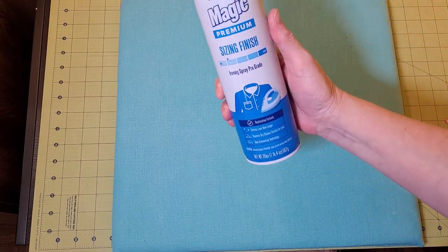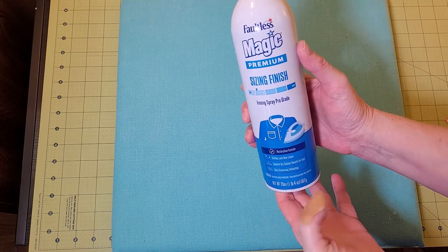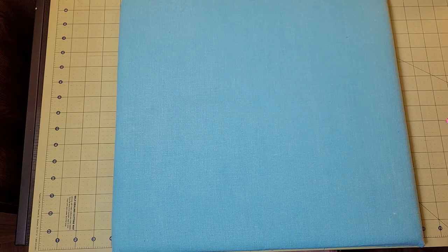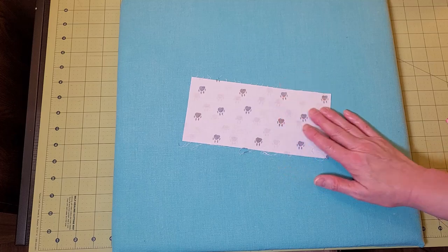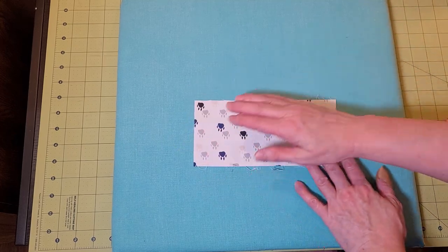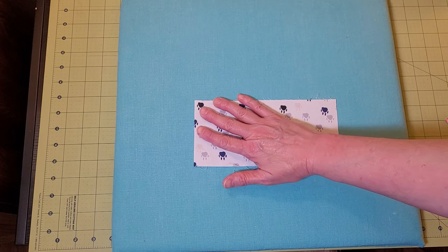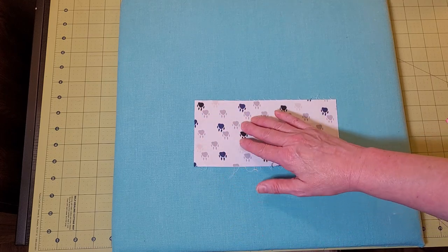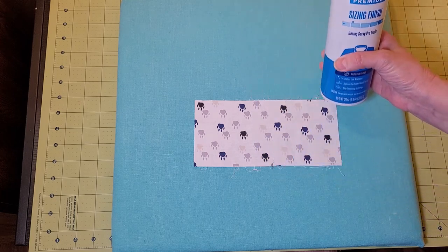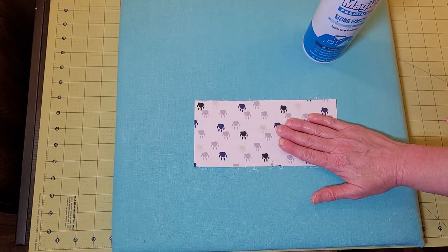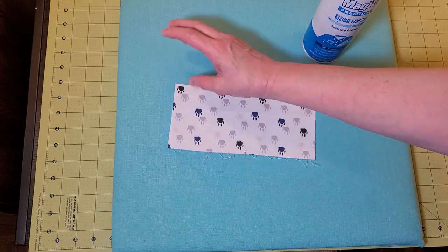One of the first things that I want to show you is a product that I use a lot, which is sizing. I use this a lot when I'm getting ready to make bags, quilts, anything where I want a really crisp seam. When you first buy a fabric before you've washed it, it has a certain finish to it, and what's in there is sizing. It gives you a little bit more crispness to your fabric.